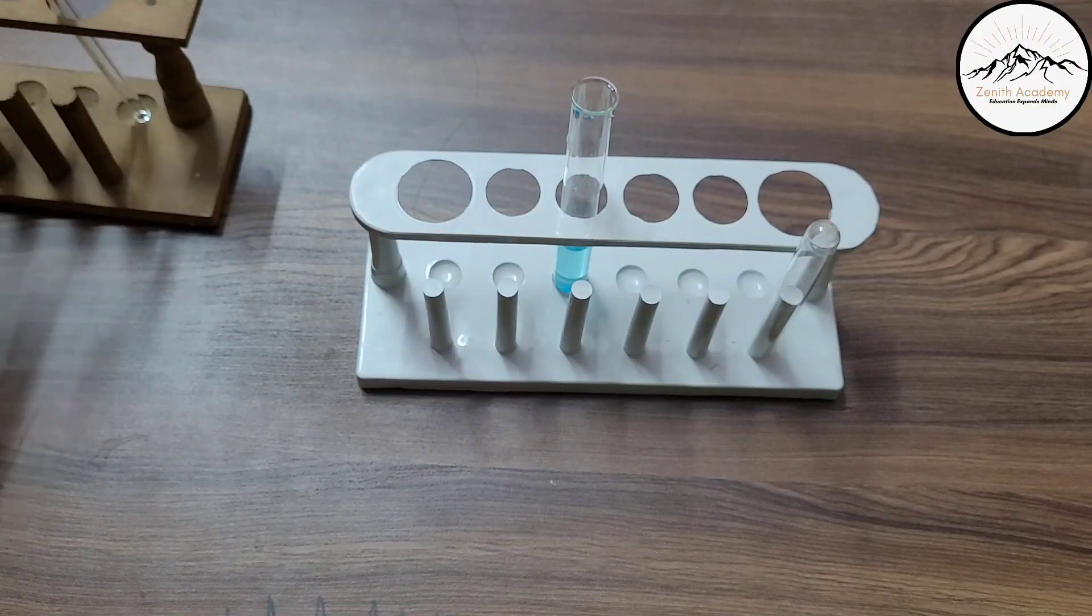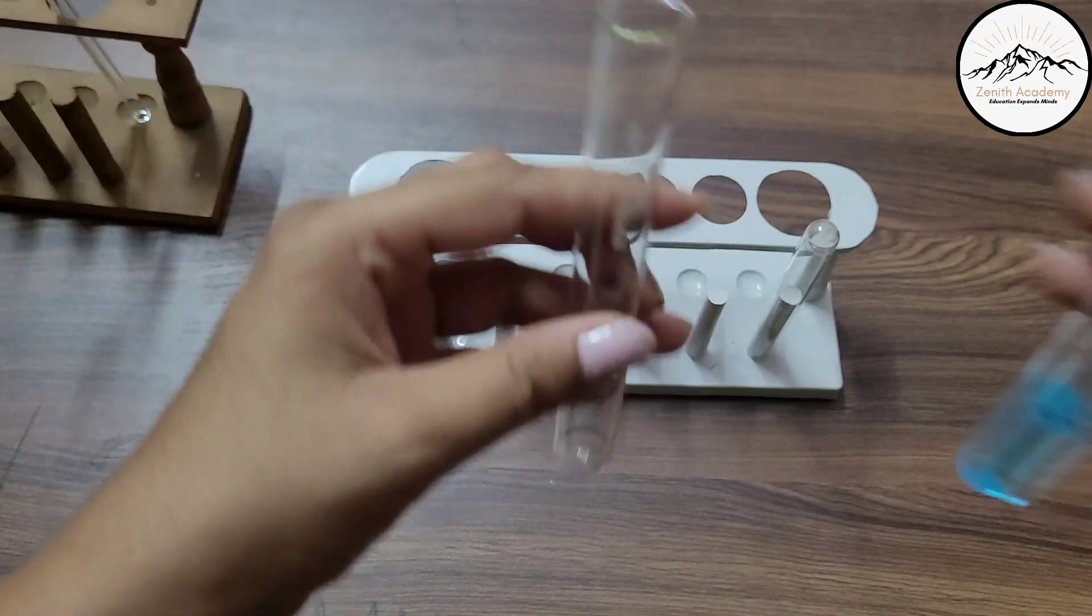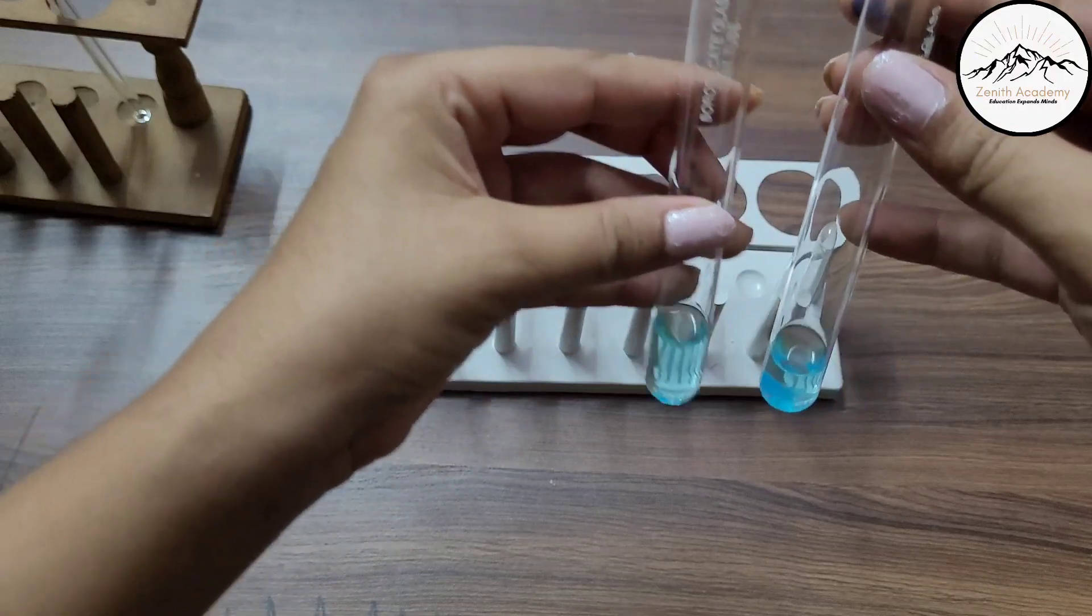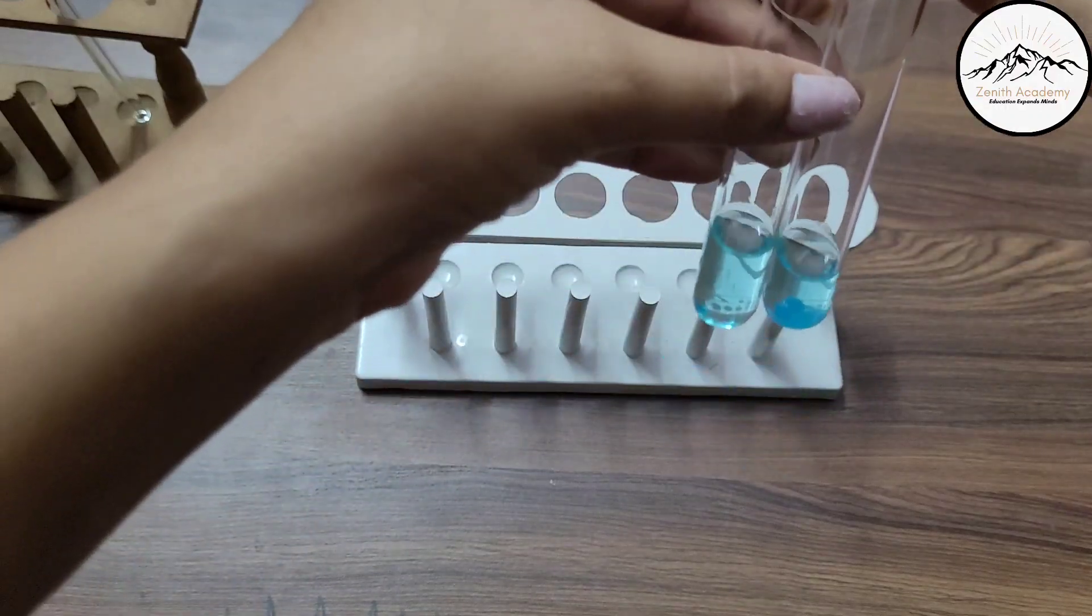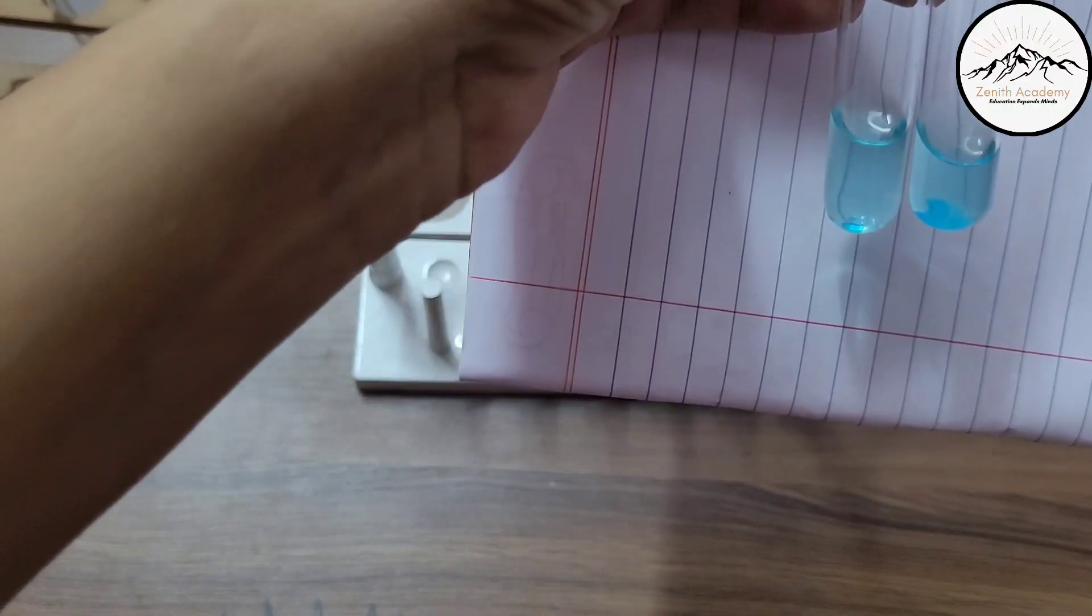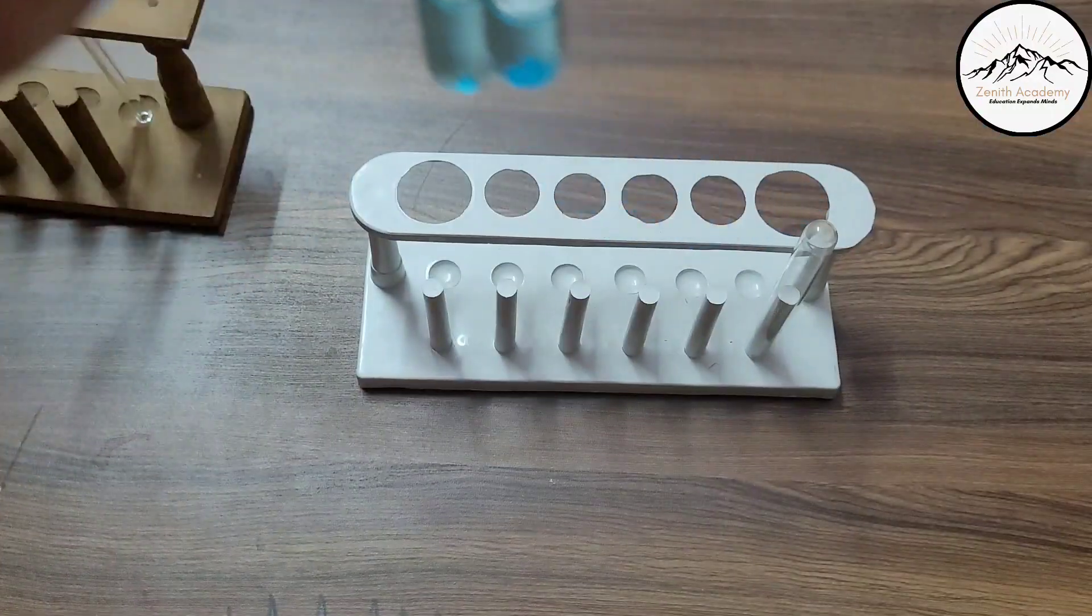Now I will divide this solution into two so that one we can keep as a standard. One we will keep for observation so that we can compare the color. See I have divided it into two. It is blue in color.